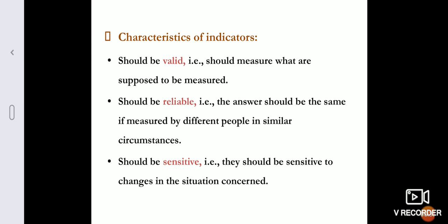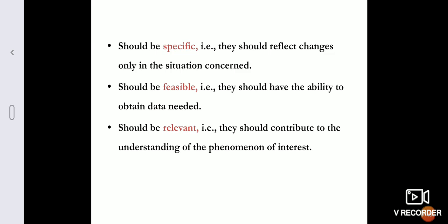So what are the characteristics of these indicators? It should be valid, meaning it should measure what it is supposed to measure, and should be reliable. Reliable means that when many people count or measure it, it should give the same result under different circumstances. It should be sensitive, able to recognize even minor changes in a situation. It should be specific, reflecting whatever changes occur in that situation. And it should be feasible and relevant. These are the characteristics of indicators.